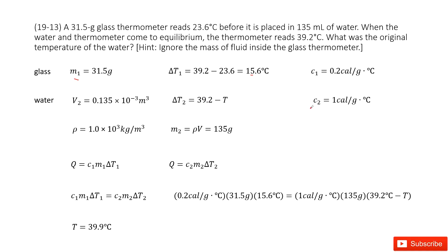We check the textbook to get the specific heat for water as C2. Now the heat transferred from the glass to the water means the heat for the glass is C1 times M1, and the heat for the water is C2 times M2, where M2 is the mass of the water. We get M2 by using density times volume, which gives us 135 grams.